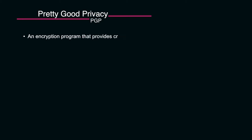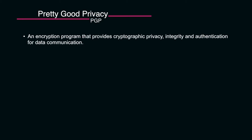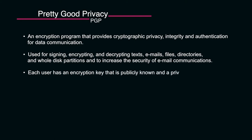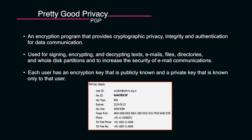Another tool used by CSIRTs in incident handling is PGP — an encryption program that provides cryptographic privacy, integrity, and authentication for data communication. If you receive an email from a national CERT, PGP helps you verify whether the email is really from that CERT. You can verify the signature and fingerprint key ID from the CERT's website. When sharing sensitive incident or breach-related information, you should use PGP to encrypt the information, sign emails and files, and verify trust.